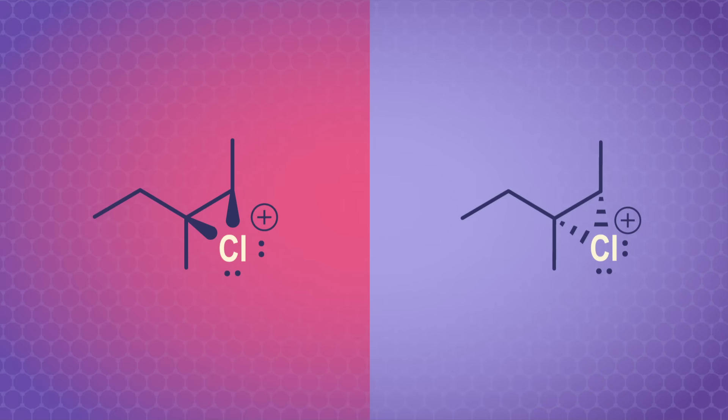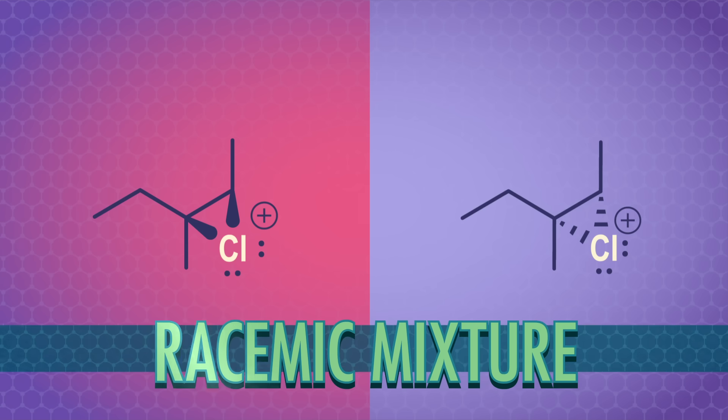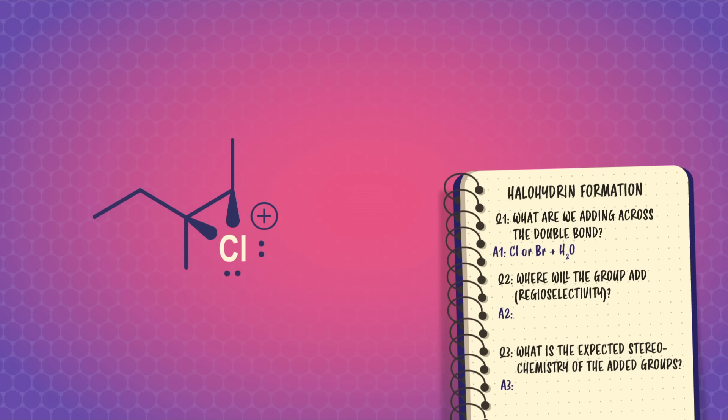Stereochemically speaking, the chloronium bridge can be sticking up or down, which ultimately means that we'll get equal amounts of these two enantiomers reacting with water to make our final products. If you remember all the way back to episodes 8 and 9, that's a racemic mixture. Now it's time to think about question number two.